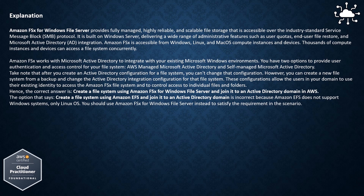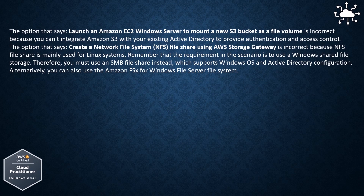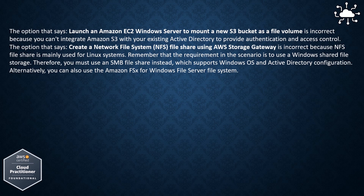Launching an Amazon EC2 Windows server to mount a new S3 bucket as a file volume is incorrect because you can't integrate Amazon S3 with your existing Active Directory to provide authentication and access control. Creating an NFS file share using AWS Storage Gateway is incorrect because NFS file share is mainly used for Linux systems. The requirement is to use a Windows shared file storage, so you must use an SMB file share instead, which supports Windows OS and Active Directory configuration. Alternatively, you can also use Amazon FSx for Windows File Server.